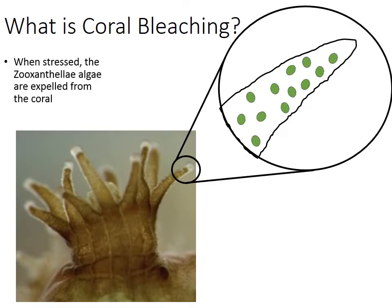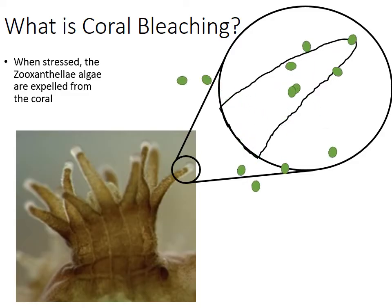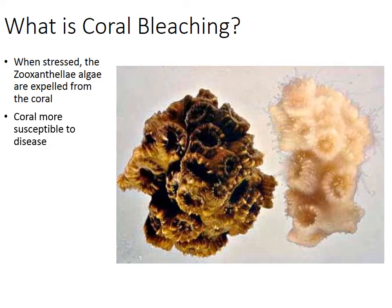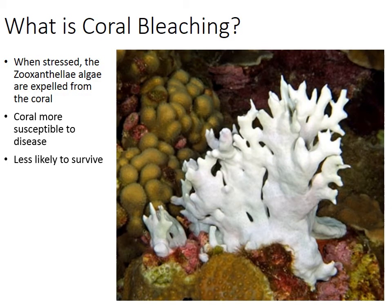So what is coral bleaching? When stressed, the zoanthellae algae are actually expelled from the coral, and the coral lose their color. But it's much more serious than just losing color. The corals become more susceptible to disease, because they just lost the zoanthellae algae — their primary source of food. So now, having lost one of their main food sources — the glucose created by the zoanthellae algae — they're far more susceptible to disease.